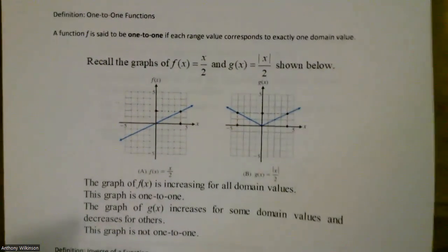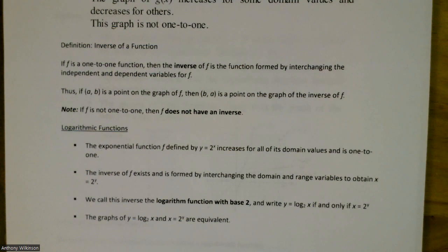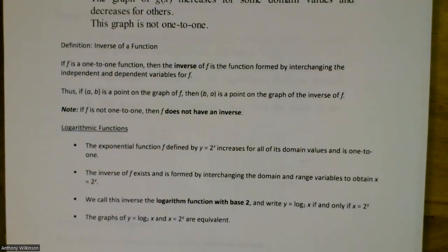Now let's talk about what an inverse function is. If f is a one-to-one function, then the inverse of f is the function formed by interchanging the independent and dependent variables. Thus, if the ordered pair (a, b) is a point on the graph of f, then (b, a) is a point on the graph of the inverse of f. If your function is not one-to-one, then it does not have an inverse.